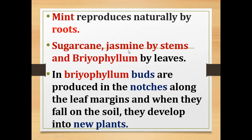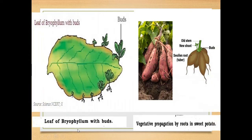Sugarcane and josweed can be developed from stem. In bryophyllum, buds are produced in the notches along the leaf margin, and when they fall on the soil they develop into a new plant. Here you can see the picture of the leaf of bryophyllum with the buds. When these buds fall into the soil, they develop into a new young plant.